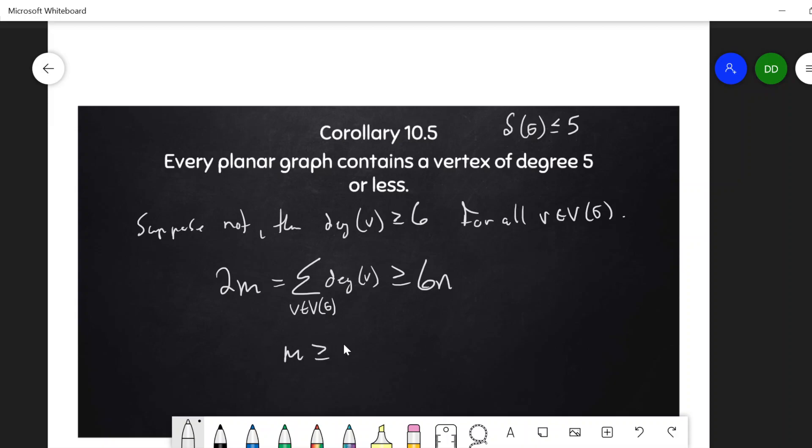So this tells us that m is greater than or equal to 3n, which implies that m is greater than 3n minus 6. So g is not planar.